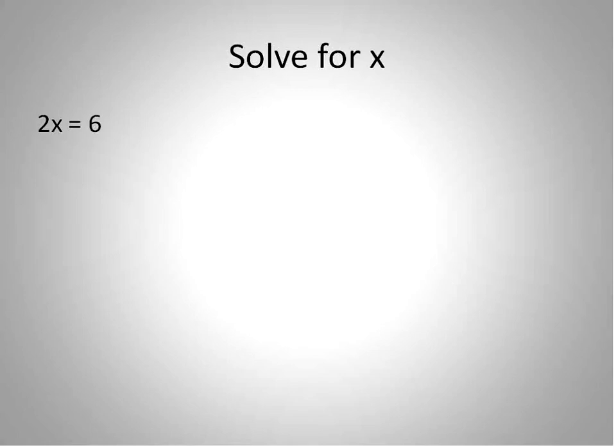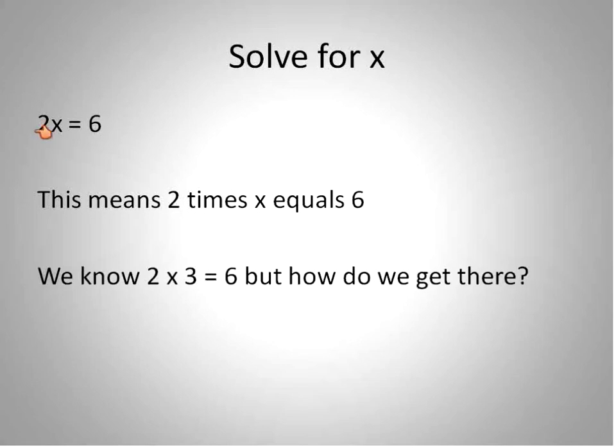When you get an equation like this, what that means is that you've got whatever is on the left side of the equation is equal to whatever is on the right side. So in this case, 2x is equal to 6. Or in other words, 2 times something is equal to 6. Now most of us looking at that will go 2 times something is 6. Well, we know 2 times 3 is 6. But how did we actually get there?